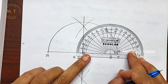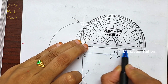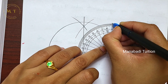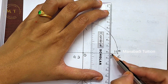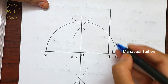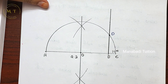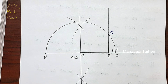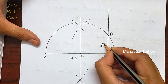Use a protractor to mark 90 degrees at B. The perpendicular from B touches the semicircle at point D. So BD is the required length. The line segment B to D equals root 9.3.